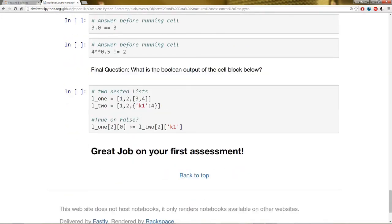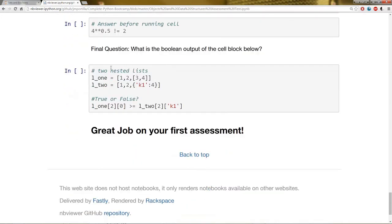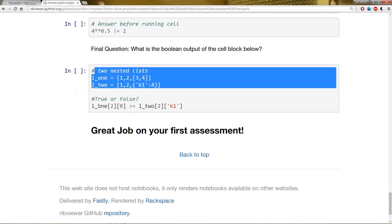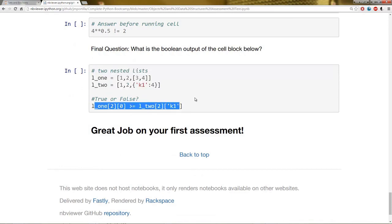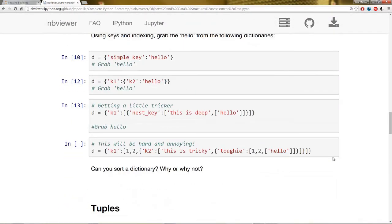Then there's one final question. Given these two nested lists, what do you think will be the output of this cell block? And then run it to check your answer. That's it. And good luck on your first assessment. Thanks guys.